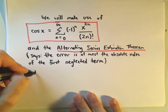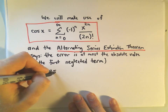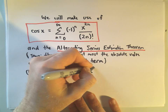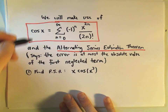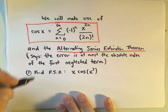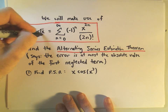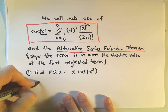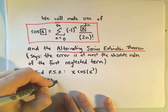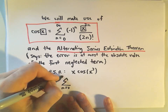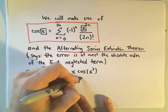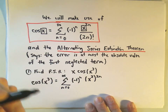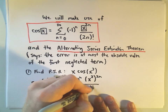The first thing I want to do is find a power series representation for x times cosine x cubed. This is easy to do by manipulating the known power series — whatever you plug in, you just raise it to the 2n. So cosine of x cubed is the summation from n equals 0 to infinity of negative 1 to the n, times x cubed raised to the 2n power, all divided by 2n factorial.